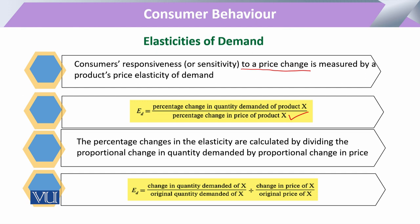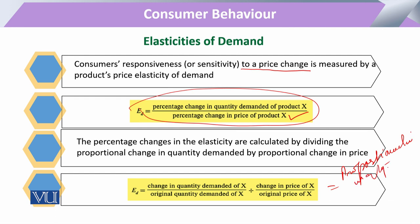Price elasticity of demand is expressed in the form of percentage or proportional change. The percentage change in elasticity is calculated as the change in the quantity demanded of X due to the change in the price of that commodity. So it will be equal to the proportional change in quantity demanded divided by the proportional change in price.